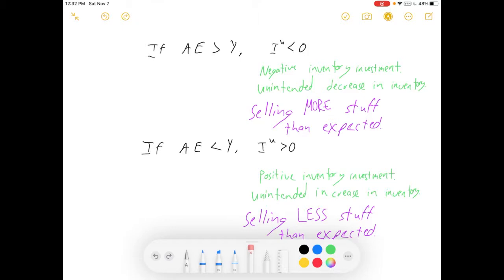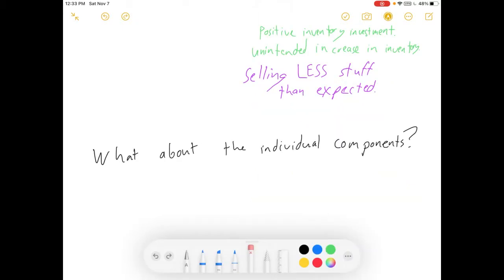And so our equilibrium tells us the sweet spot. And whether the IU is positive or negative also gives us some really interesting information. Now what about the individual components of our curves? So AE is equal to C plus I plus G plus net exports.